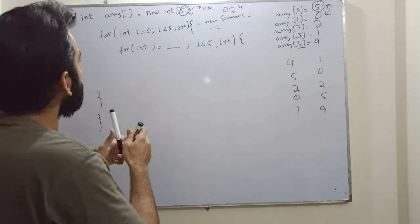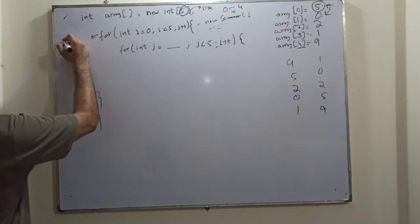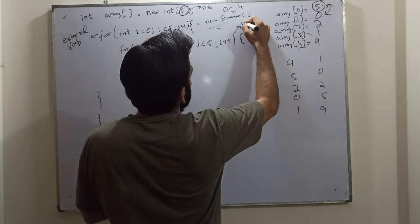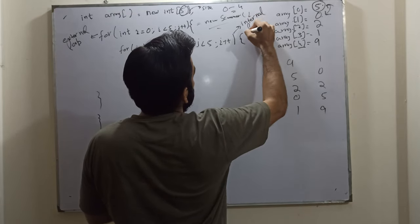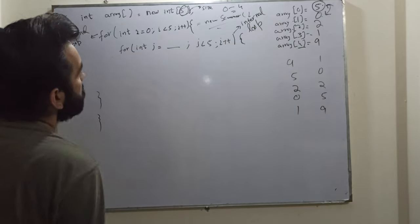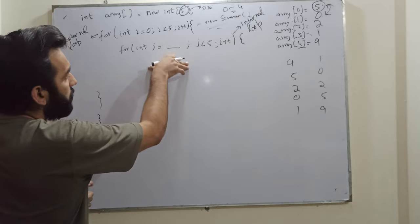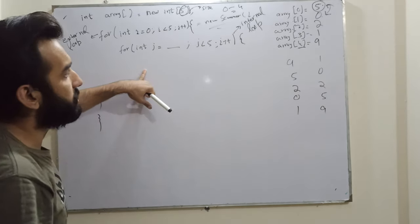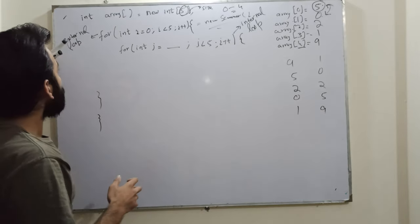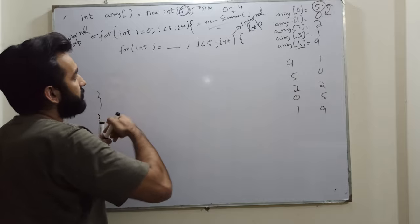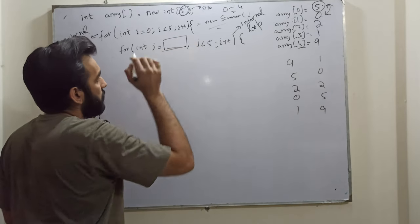In programming, we say this is the external loop and this is the internal loop, because it is inside the outer loop. Every loop inside another loop is internal. In this scenario we have only two loops — one external and one internal. Currently I have not put any value for where j will start, so let's create the logic for that.